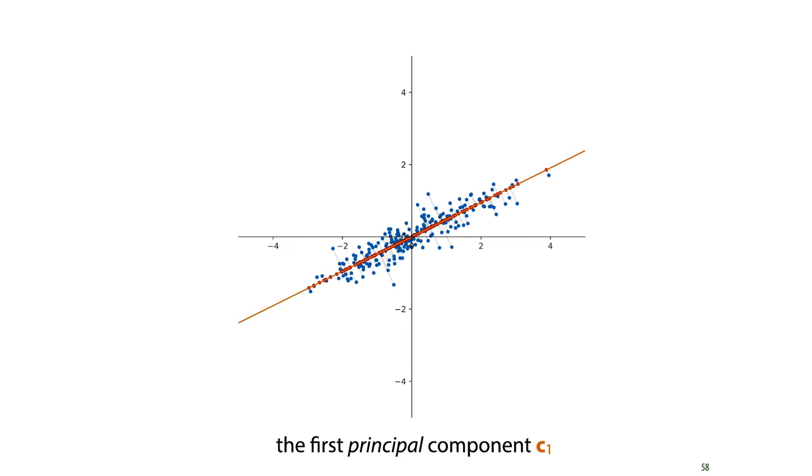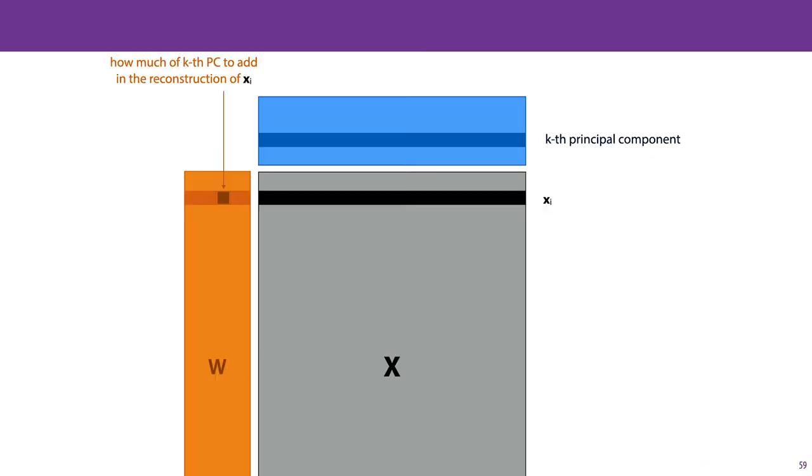Our first dimensionality reduction method, principal component analysis, was also based on a linear transformation. And indeed, the solution to principal component analysis fits this same structure.